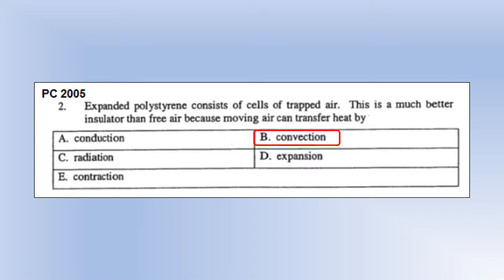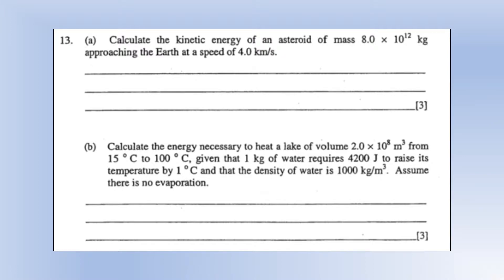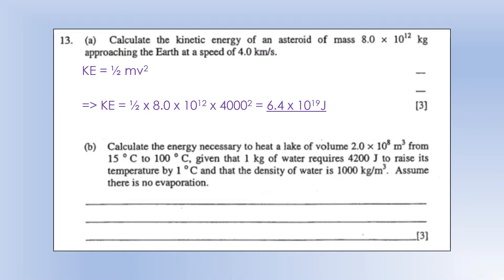Calculate the kinetic energy of an asteroid of mass 8 times 10 to the 12 kg, approaching Earth at a speed of 4 km per second. Fairly simple, just use k equals half mv squared, and we get the kinetic energy.